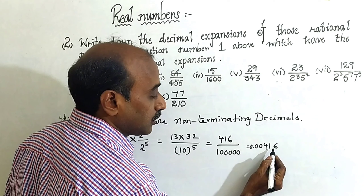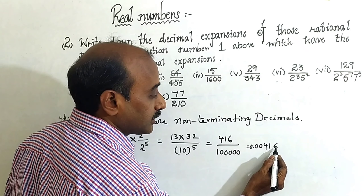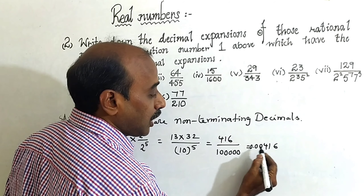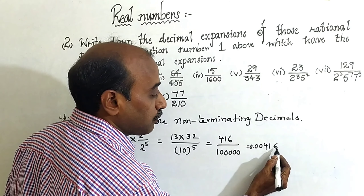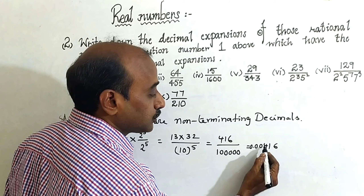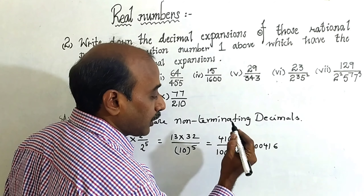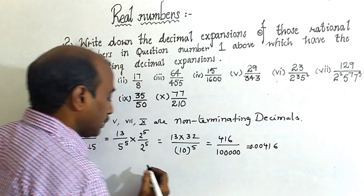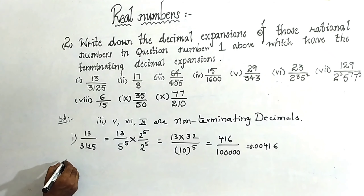Here you can observe there are five digits after the decimal point: one, two, three, four, five. Now come to the second one.